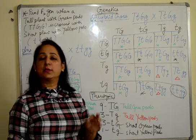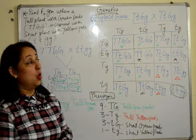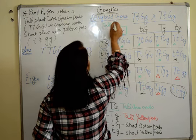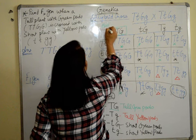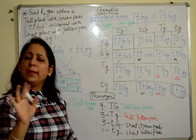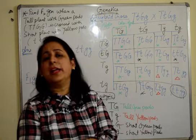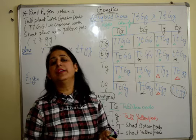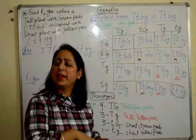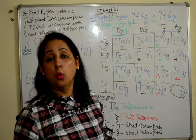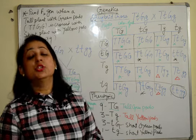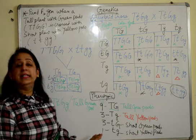So dihybrid cross explains law of independent assortment. How is it so? So as you see that there are two alleles present. One is for height and other is for color of pods. These two have no influence on each other. That means they are present together but they are independent of each other's expression. There is no link between them. So they are independent of each other's expression, which is law of independent assortment. So this was explained by Mendel by giving this derivation.